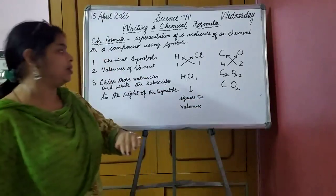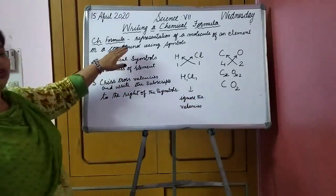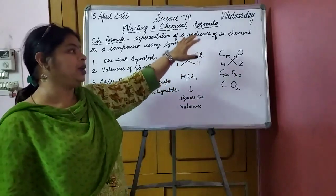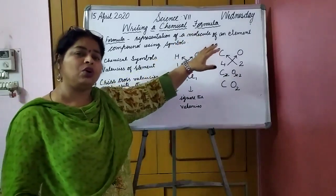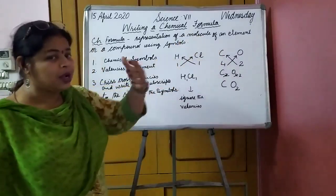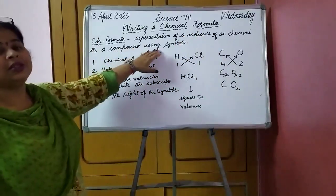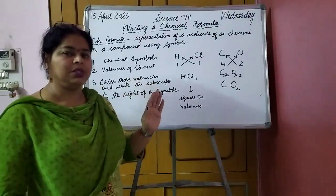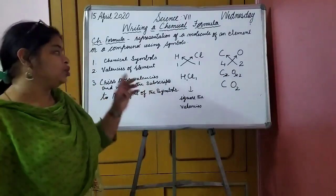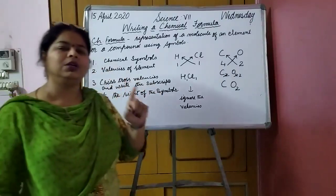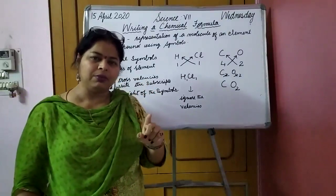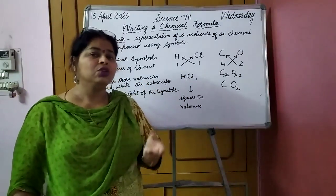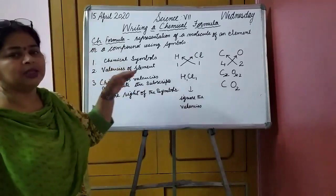So this is how we are going to write down the chemical formulae. Let us again recall: chemical formulae are the representation of a molecule of an element or a molecule of a compound using symbols. So we are learning how to write down the chemical formulae. First of all, you have to learn the chemical symbols. If you do not know the chemical symbols, how will you be able to write them?